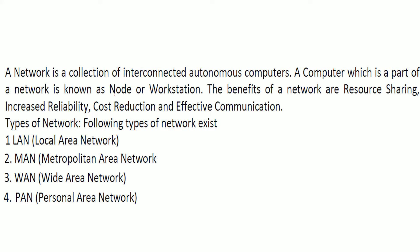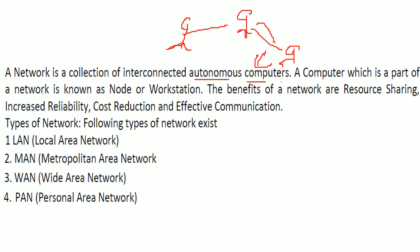What is a network? A network is simply the way you connect with your friends — you are here, your friend is there, and they have other friends, forming a network. So a network is a collection of interconnected autonomous computers. A computer which is part of a network is known as a node or workstation. You are a node, your friend is a node, their friend is a node.